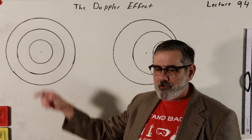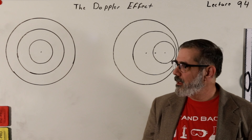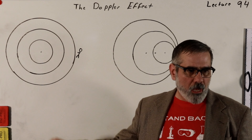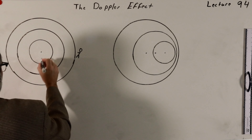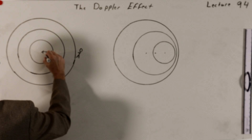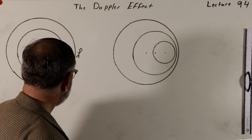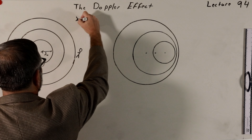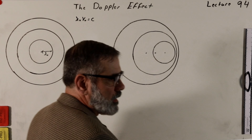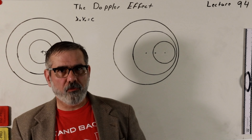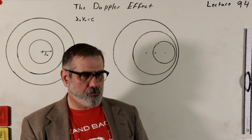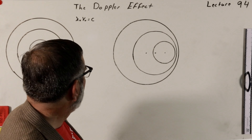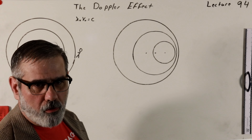If we have an object radiating and it's not moving, and our observer is standing over here somewhere, as time goes on they're going to see wave fronts approach them. The wavelength is just this distance here — lambda nought. This observer will observe a frequency given by lambda nought times nu nought equals c, where c is the wave speed. The fundamental relationship that lambda times nu, the frequency, equals the wave speed, holds always.